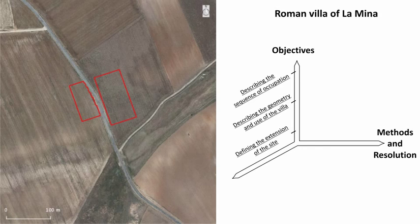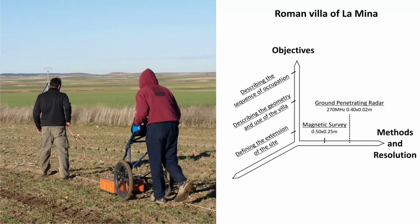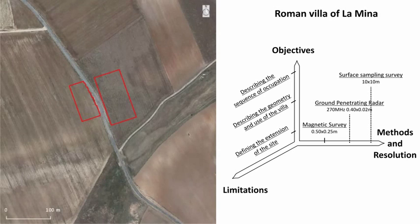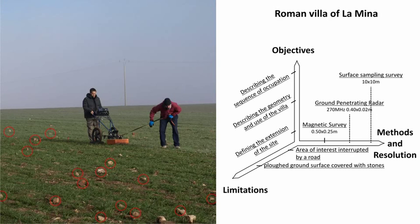The methods used were a magnetic survey, ground-penetrating radar, and a surface sampling survey. The main limitations of the project were that the area of interest was interrupted by a secondary road, the ground surface was plowed and covered with stones, and the acquisition had to be done in two days.